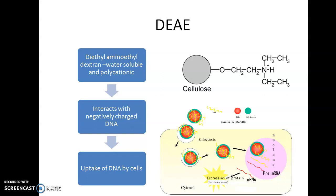The next method is DEAE or dextran-mediated transfection. DEAE stands for diethylaminoethyl dextran; it is water-soluble and polycationic, meaning it carries multiple positive charges. DEAE is added to the transfection solution containing DNA, and it brings about DNA uptake by the cell through endocytosis because it interacts with the negatively charged DNA molecule and with cell surface components. This procedure is highly suited for transient transfections in molecular studies.